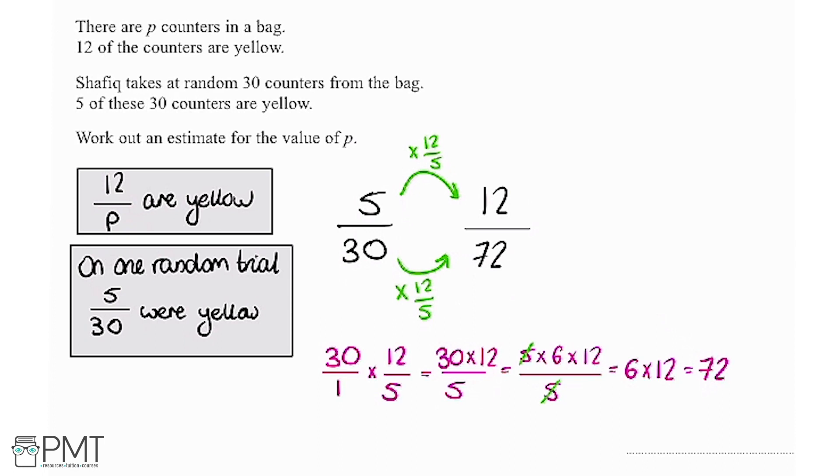Now this is in the question only an estimate. That's because this figure of 5 out of 30 being yellow is only what occurred on one trial. Another time that someone takes 30 out of the bag maybe they'll get 6 yellow or maybe they would only get 4 yellow another time.